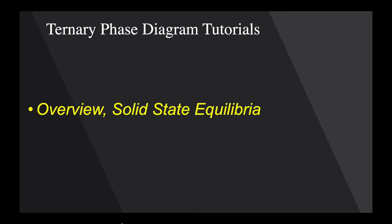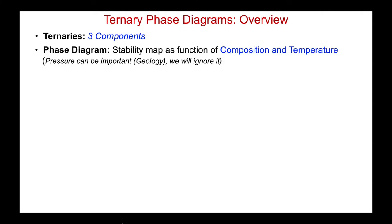So let's begin with an overview and look at solid-state equilibria in these systems. A ternary system by definition has three independent components, and our phase diagram maps the equilibrium states of the system as a function of composition and temperature. Pressure can also be important — in particular in geology — but we will ignore it here.